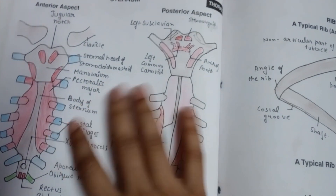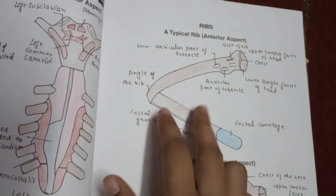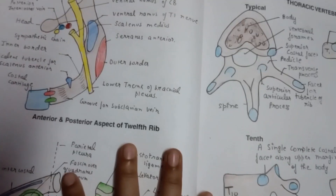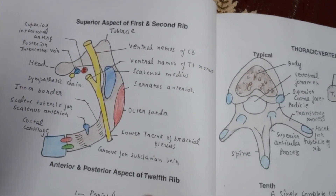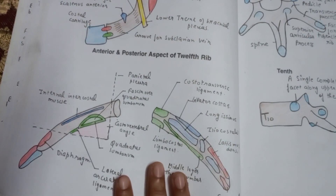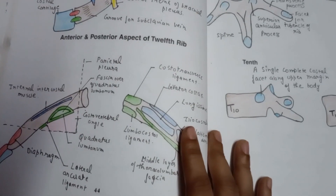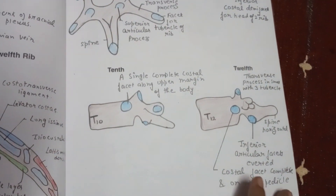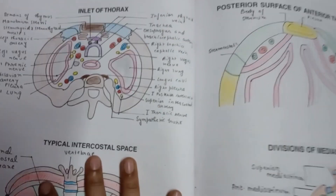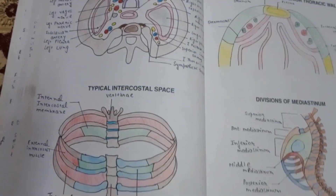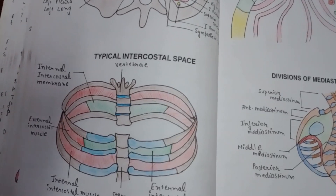After the ankle joint, this is the diagram of the sternum — differentiated into anterior aspect and posterior aspect. These are the diagrams of your ribs. After ribs, superior aspect of the first and second rib, and the anterior and posterior aspect of your 12th rib. This is the thoracic vertebra, and this is the inlet of thorax and a typical intercostal space.